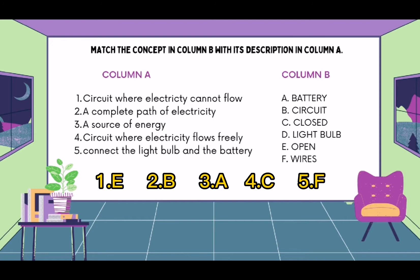Number 3, a source of energy is battery. Number 4, a circuit where electricity flows freely is a closed circuit.